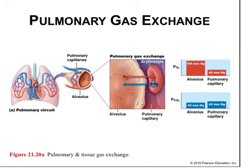Pulmonary gas exchange is driven by pressure gradients created by differences in partial pressures of oxygen and CO2 between the air in the alveoli and the blood in the pulmonary capillaries. Blood has a low oxygen pressure of about 40 mmHg, while the oxygen in the air is at 104 mmHg, and the pressure gradient thus favors the diffusion of oxygen into blood. The pressure gradient favors the diffusion of carbon dioxide from capillary blood, which is at 45 mmHg, into the alveoli, which is at 40 mmHg — aided by carbon dioxide's relatively high water solubility compared to oxygen.